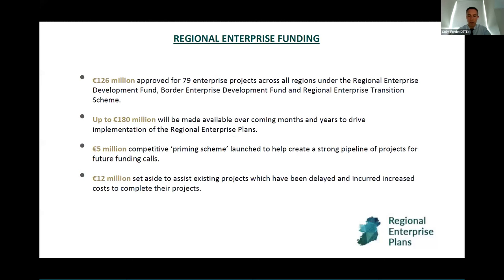When we launch these plans around the country, the message from our stakeholders is: well, if we have the plan, where's the money to implement them? We have now provided up to €180 million to help implement the plans over the next couple of years, coming from the European Regional Development Fund. That builds on €126 million already provided for existing projects under the regional enterprise development fund, the border enterprise development fund, and the regional enterprise transition scheme. In light of challenges with construction costs, an additional €12 million has been set aside to help finish off previously sanctioned projects. Currently there's a €5 million competitive priming scheme open from Enterprise Ireland, inviting applications, and many local authorities are already engaged in that process.